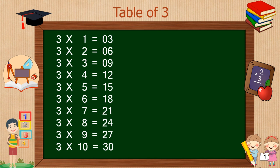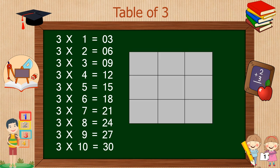Here is a very simple trick to write down the table of 3. Just draw a matrix of 3 rows and 3 columns. In this matrix, write down the numbers 1 to 9, starting from the left bottom: 1, 2, 3, 4, 5, 6, 7, 8, 9.